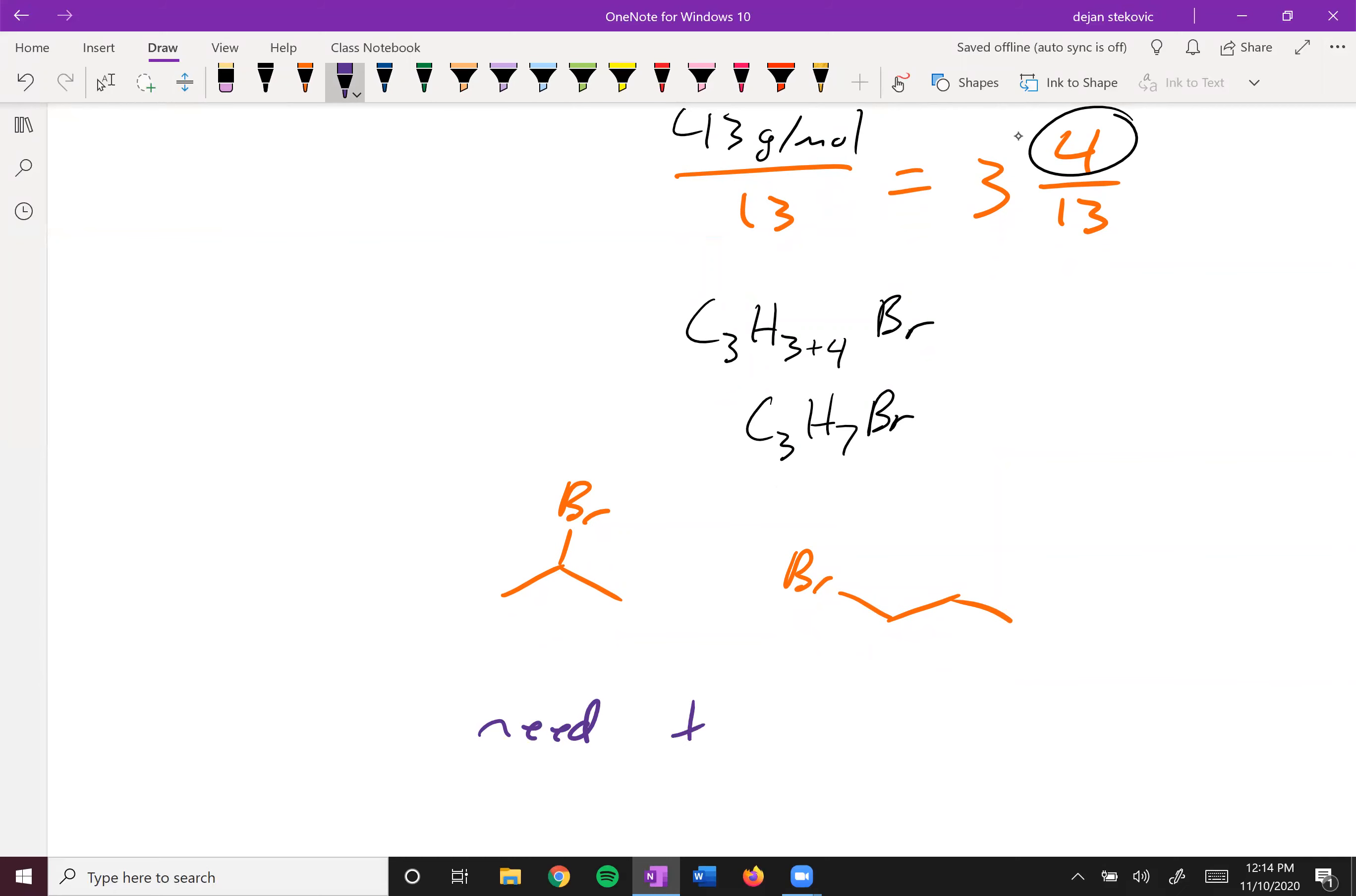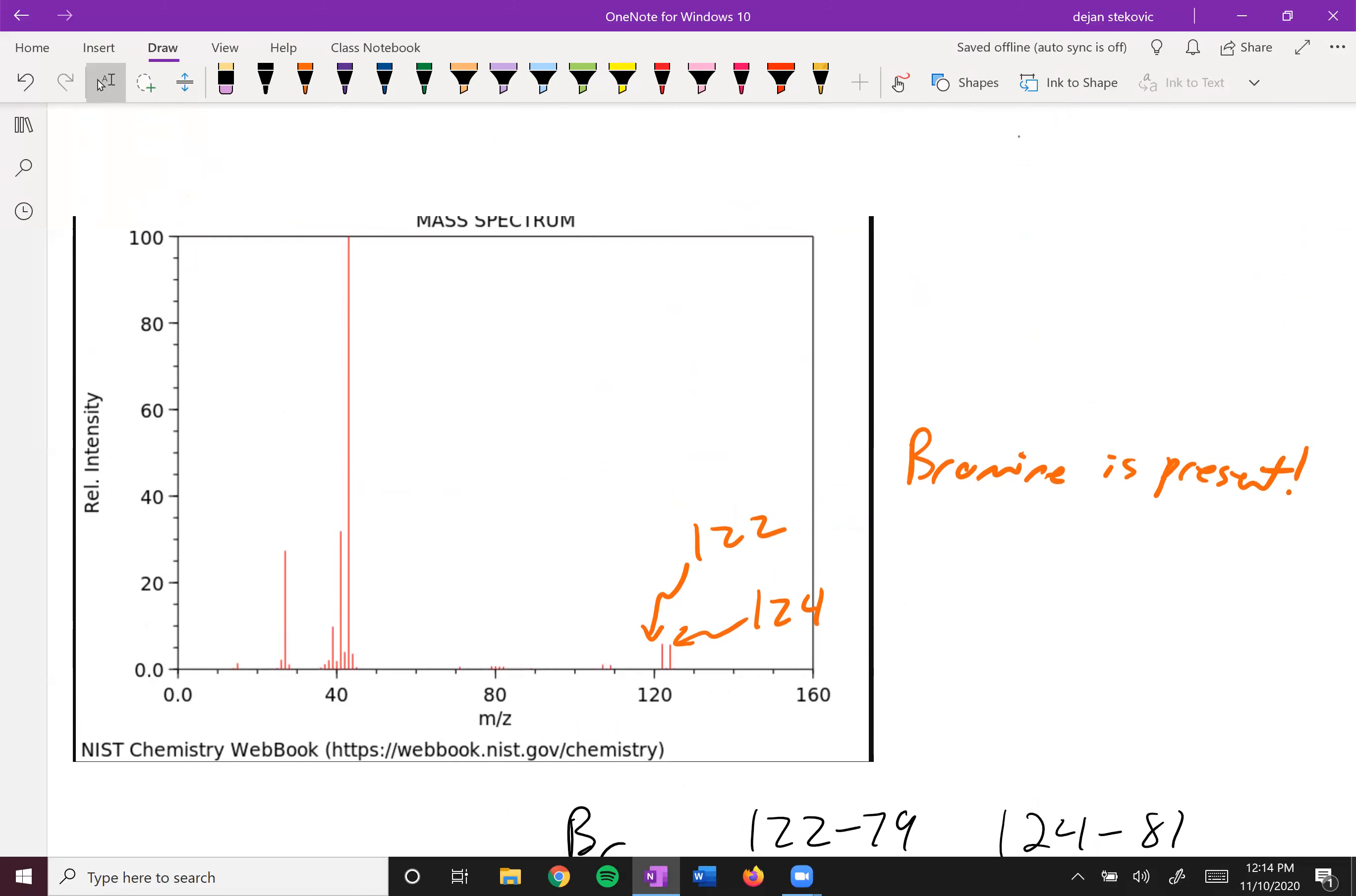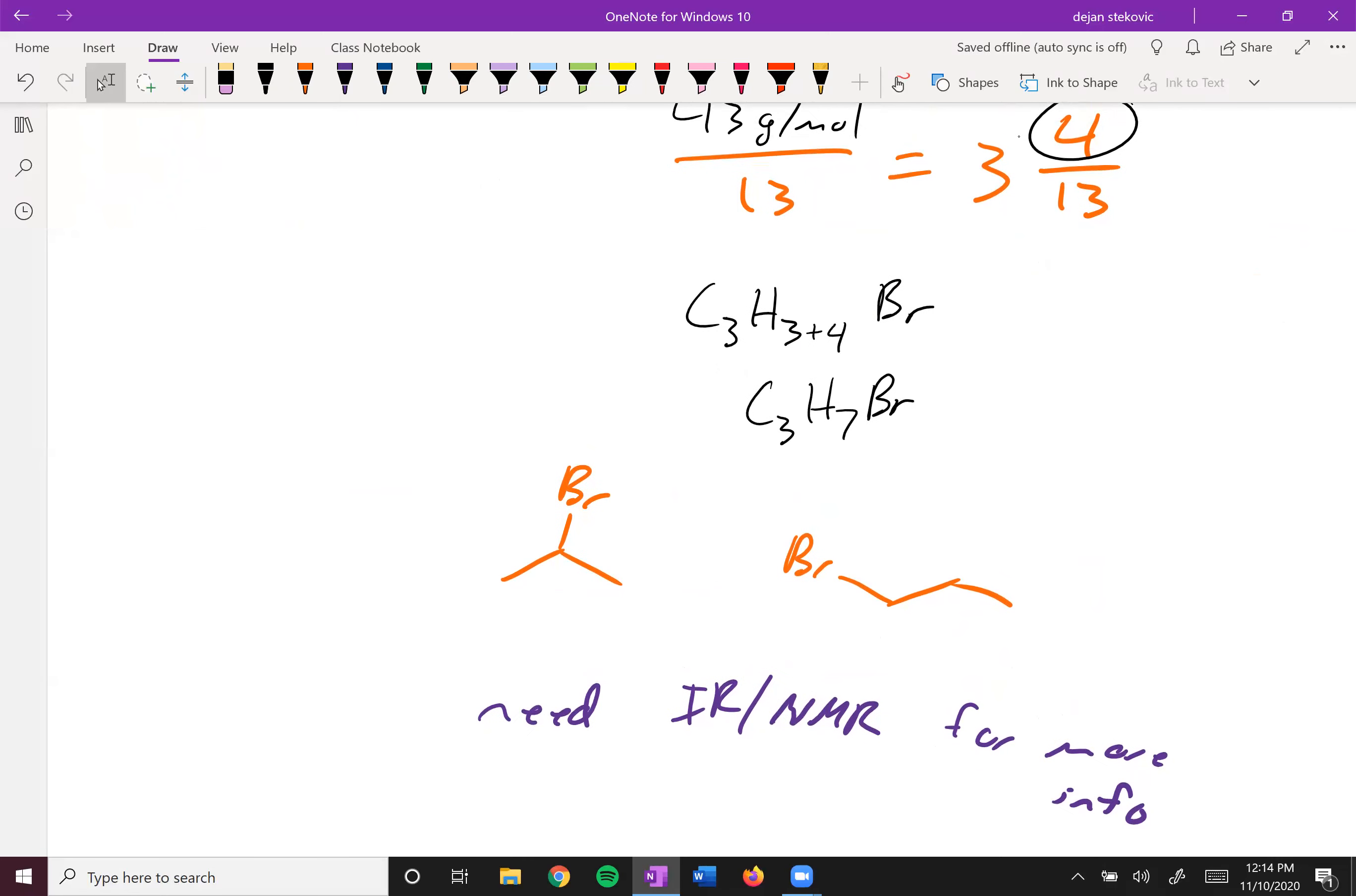And so to figure out which one it is, we would need IR or NMR. IR won't really help you. So it's really NMR for more info. You could try to take a look at the fragmentation pattern of your compound. But that's the harder route. NMR is going to be the easier way to go. But you want to use this rule of 13 as a starting point.